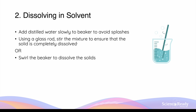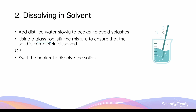Once we've measured the correct quantity, we add distilled water slowly into the beaker to avoid any splashes, as splashing could lead to loss of the sodium hydrogen carbonate we carefully measured. When using water as a solvent, always use distilled or deionized water, because common mineral ions such as sodium, magnesium, and calcium are removed. These ions can interfere with the chemical being dissolved and affect the final concentration — so do not use tap water.